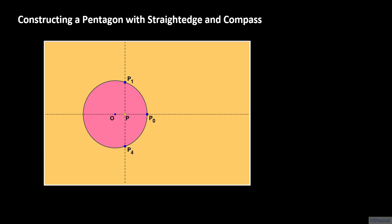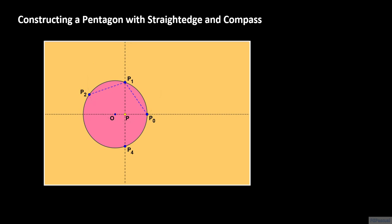To find the other two vertices of our pentagon, we use segment P sub 0 P sub 1 as the radius for our compass and construct a circle centered at P sub 1. This circle intersects the unit circle at two points: one of them is P sub 0, and the other we call P sub 2. Maintaining the same radius, we construct a circle centered at P sub 2. A point of intersection between this circle and the unit circle is the fifth and final vertex of our pentagon, which we call P sub 3.